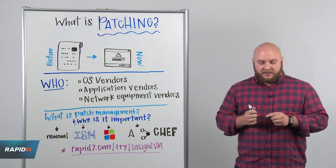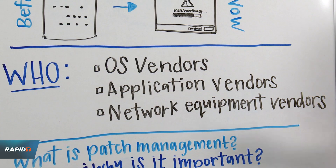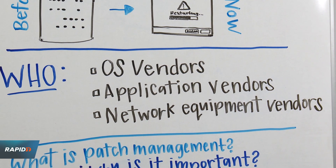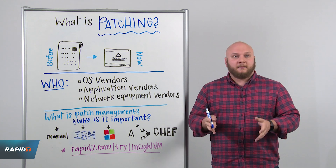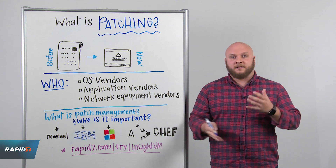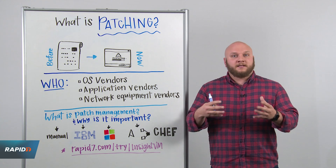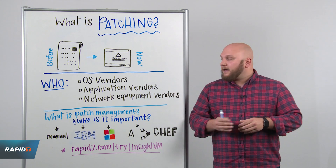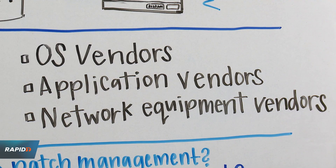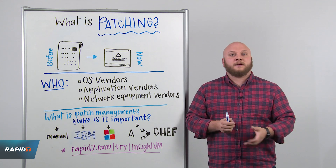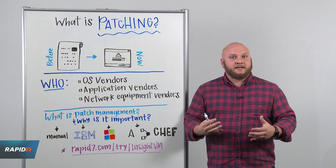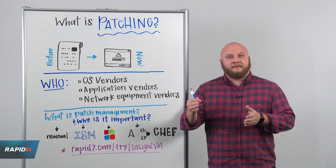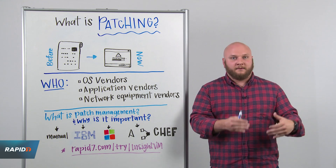In terms of who makes patches, we mentioned one already — Microsoft as an operating system vendor. Operating systems have a really important job of managing all of the components of our computer systems. There are a lot of opportunities to need to go back and fix things, so they'll release patches to address any issues. We also have application vendors — tools we use at work like Slack, Zoom, or Microsoft Word. These applications are critical to our success and it's critical that we always have them patched and 100% ready for work.